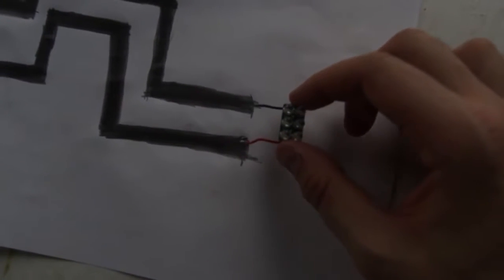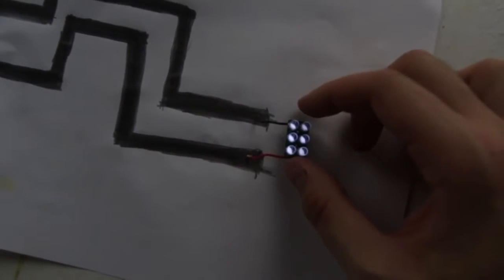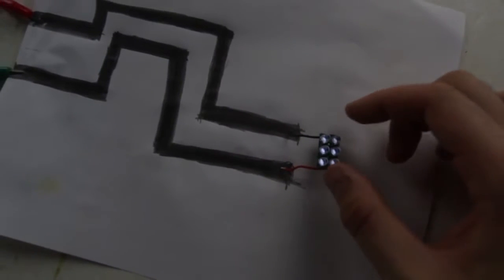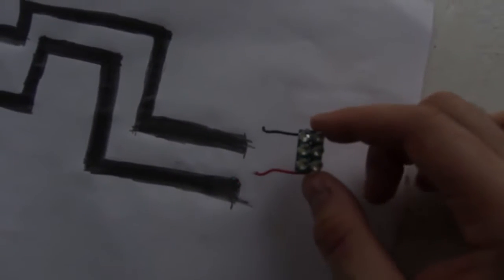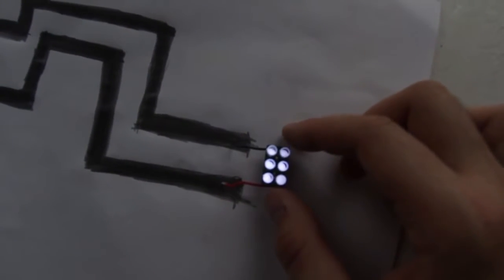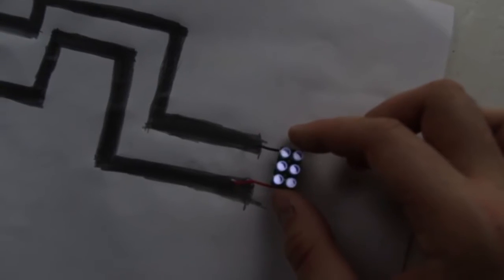If I lift it up, you see it's turned off. Boom. On again. Off. On. Graphite is conductive, so you see if we lift it up, it's off, on, off, on.